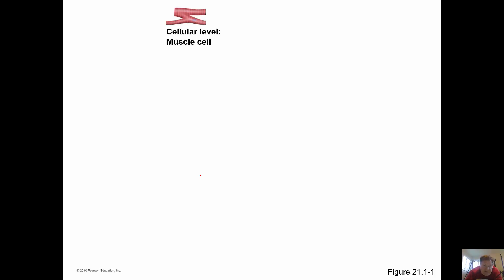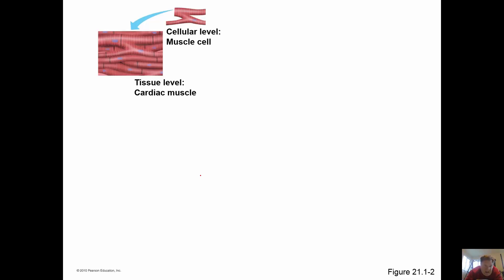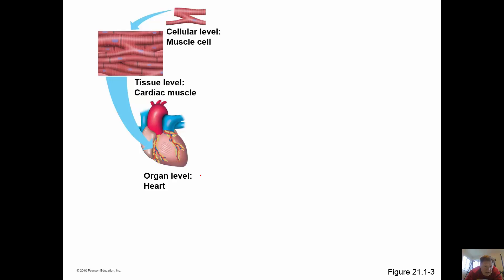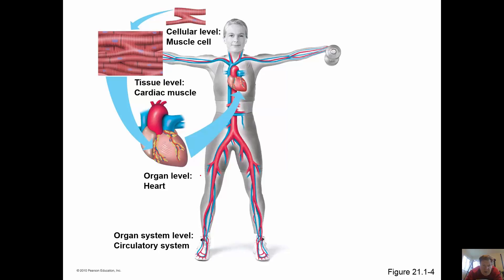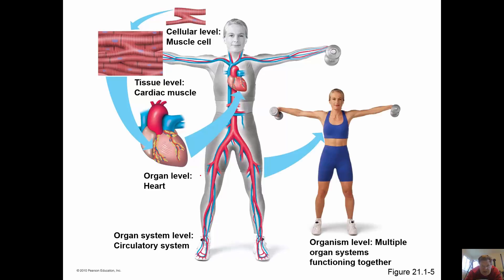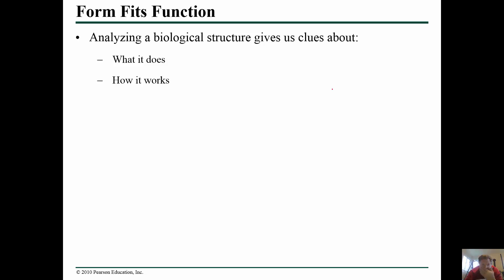Here we have a graphic showing this: a muscle cell comes together to give us muscle tissue, that muscle tissue is part of an organ which consists of other tissues as well, and those organs come together to give us an organ system, which is part of our entire body. There are roughly about eleven different identified organ systems that make up the body of an animal.